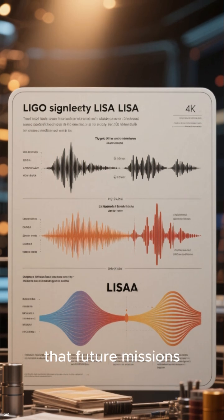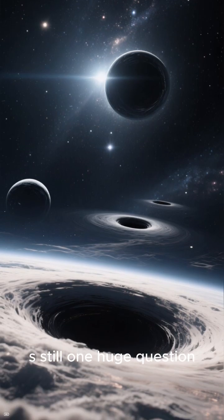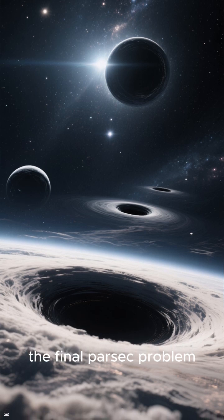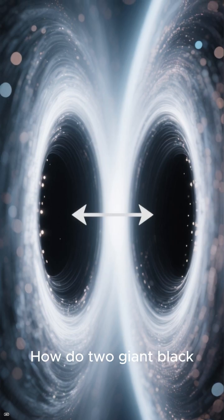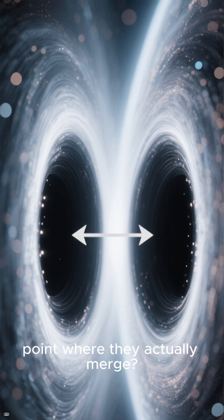But there's still one huge question. The final parsec problem. How do two giant black holes get from a few light years apart down to the point where they actually merge?